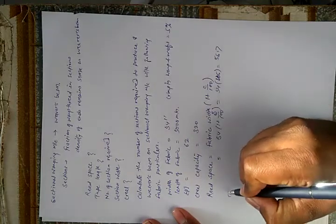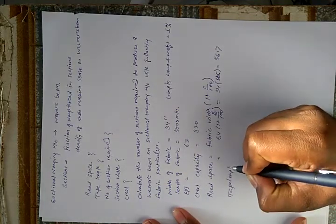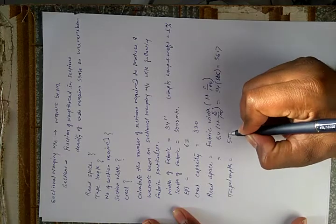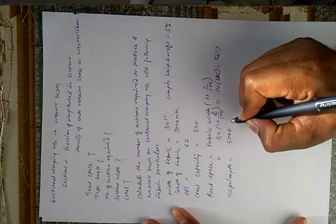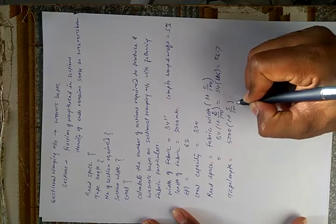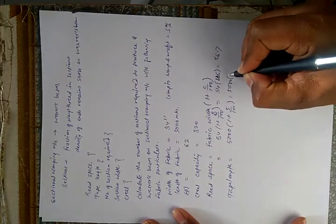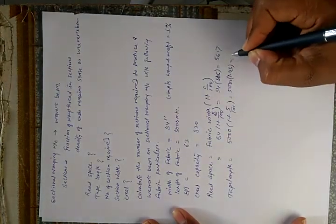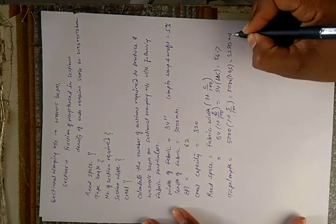Now the tape length. Our fabric length is 5000 meters, so tape length = 5000 × (1 + crimp/100) = 5000 × 1.05 = 5250 meters.